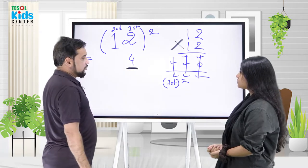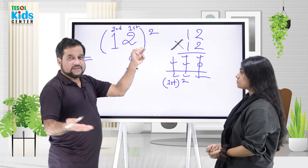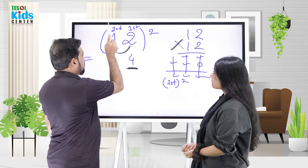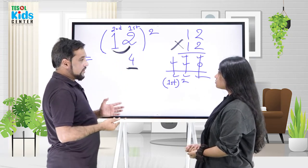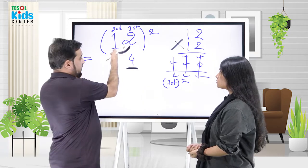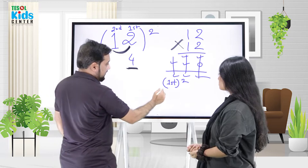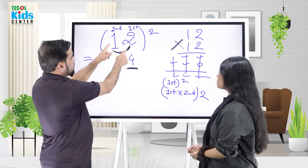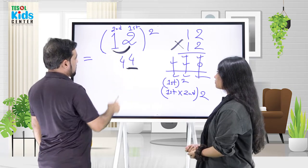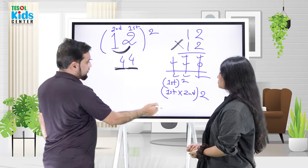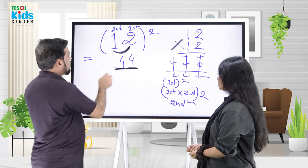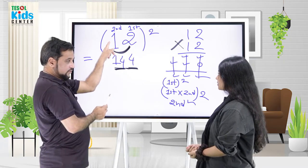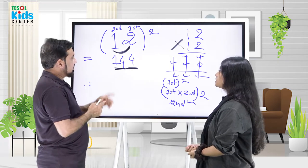Now multiply the two digits together and double it. So 1 times 2 equals 2, then double it to get 4. Write 4 in the middle. Then square the first digit. The square of 1 is 1, so we get 144.